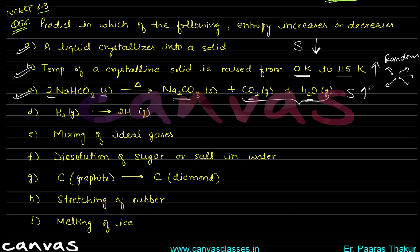D: H₂ dissociates into 2H — here we had one particle, now we have two particles with more randomness. One particle's randomness is less than two particles, because two particles can move in different directions — so entropy increases. E: Mixing of ideal gases — when we mix two things, randomness always increases, so mixing is always a more randomness-creating phenomenon. Dissolution of sugar or salt in water is also mixing, so entropy increases.